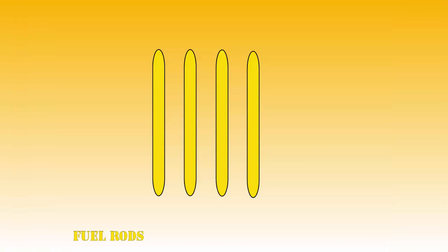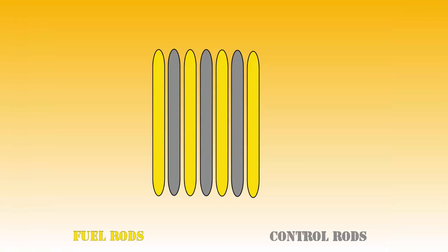Between the rods, a number of barriers is positioned, normally made of silver, indium or cadmium, which absorbs any incoming neutrons, making sure the neutrons from one rod don't reach the other ones.